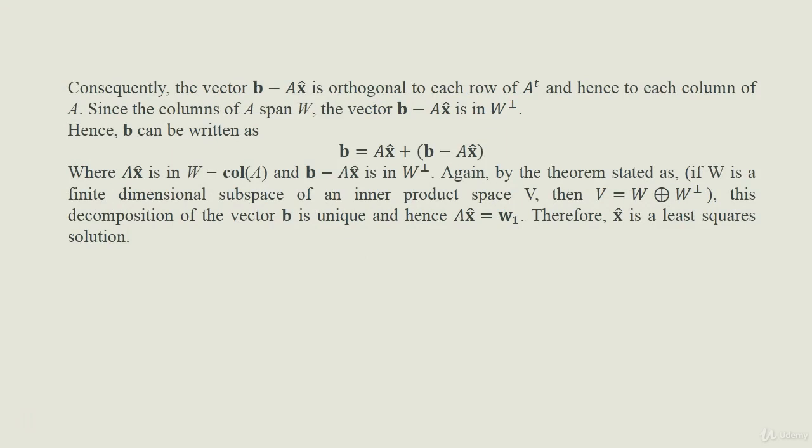Since the columns of A span W, the vector b − Ax̂ is in W⊥. Hence b can be written as b = Ax̂ + (b − Ax̂), where Ax̂ is in W (the column space of A) and (b − Ax̂) is in W⊥. By the theorem V = W ⊕ W⊥, this decomposition is unique, hence Ax̂ = w1, and therefore x̂ is a least square solution.